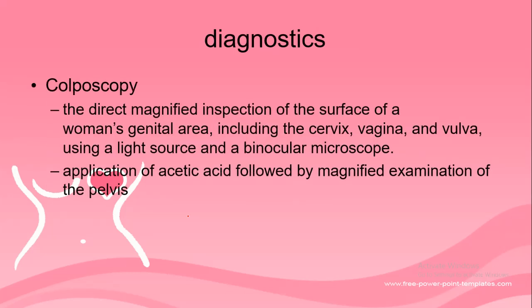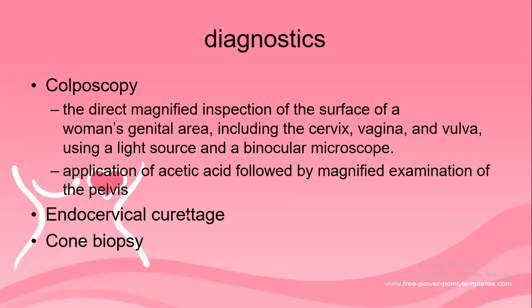Diagnostics for cervical cancer include colposcopy — the direct magnified inspection of the surface of the woman's genital area including the cervix, vagina, and vulva, using a light source and binocular microscope. Acetic acid is applied first, followed by a magnification examination. Another diagnostic is endocervical curettage, where tissue is scraped from inside the cervix for biopsy. A cone biopsy may also be performed.